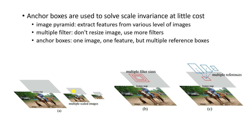Now let's talk about anchor boxes. Anchor boxes are really one of the greatest inventions for detection — used in SSD, YOLO, and Faster RCNN. The old way was to resize an image at different scales and extract features from each to handle scale invariance. Another approach uses different filter sizes. Both are computationally expensive.